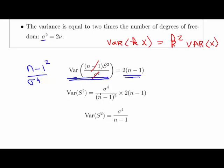So essentially what I do here is just cross multiply. So we end up with the variance of s squared equal to sigma to the fourth divided by (n minus one) squared times two times (n minus one).